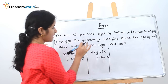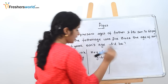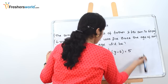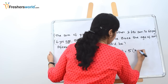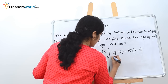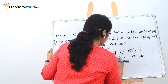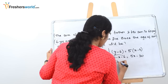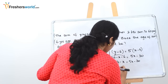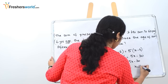For the second part: 6 years ago — 'ago' means subtract — the father's age was (y − 6) and the son's age was (x − 6), and the father was 5 times the son. So y − 6 = 5(x − 6). Substitute y = 60 − x: (60 − x) − 6 = 5x − 30, giving 54 − x = 5x − 30, so 6x = 84, meaning x = 14 years. So the son's present age is 14 years.